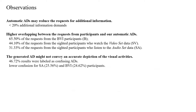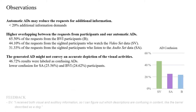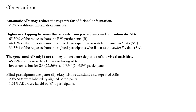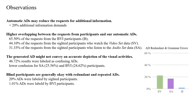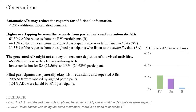Third, in terms of confusion, the generated descriptions might not convey an accurate depiction of the visual activities. Since sighted participants receive both visual and auditory information, the SV group's results achieve much higher confusion rates. The fourth observation is the stark contrast in reported redundancy between sighted and blind users — blind participants are generally okay with redundant descriptions, while sighted participants complained about excessive redundancy.